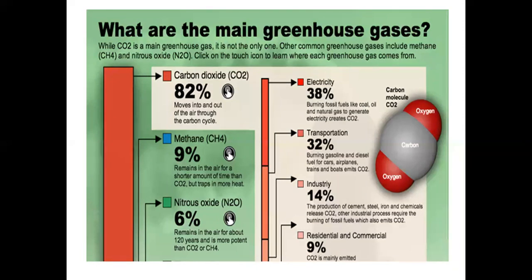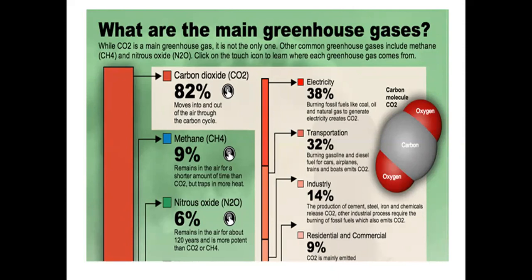As long as carbon dioxide, methane, nitrous oxide, and water vapor are within the safe prescribed percentage in the atmosphere, it is greenhouse effect — keeping the Earth's surface warm. But when the amount of carbon dioxide, methane, nitrous oxide increases due to various human activities, especially carbon dioxide — when we burn fossil fuels, a large amount of carbon dioxide is released.